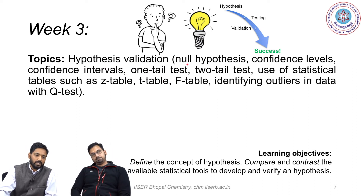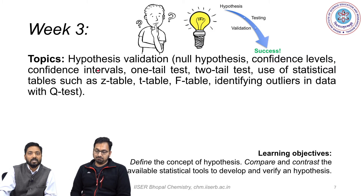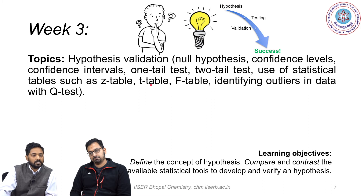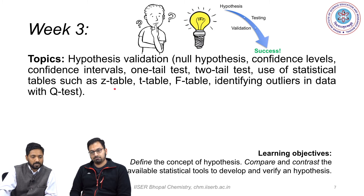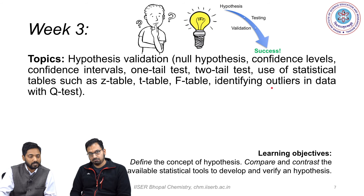In week three we will be introducing ourselves to the null hypothesis, the concept of confidence level, confidence intervals, and the various types of tests undertaken for testing the various hypotheses at hand. Some of these statistical tests and tables that we will use in this course are the z-test, the t-test, and the f-test. We will also get introduced to the very interesting concept of outliers and how to determine them using the Q-test.